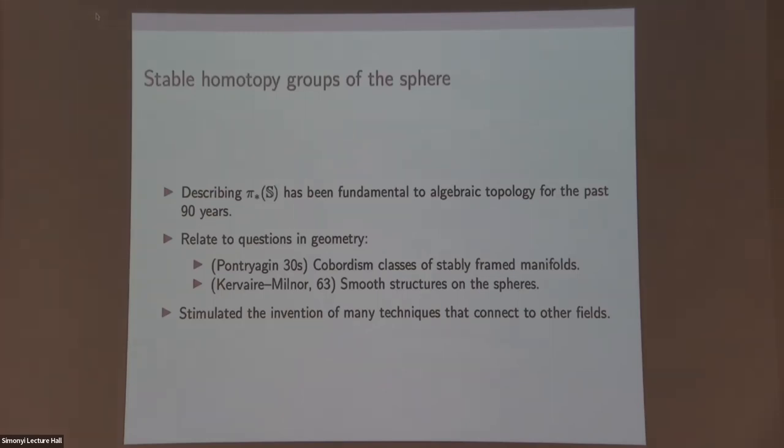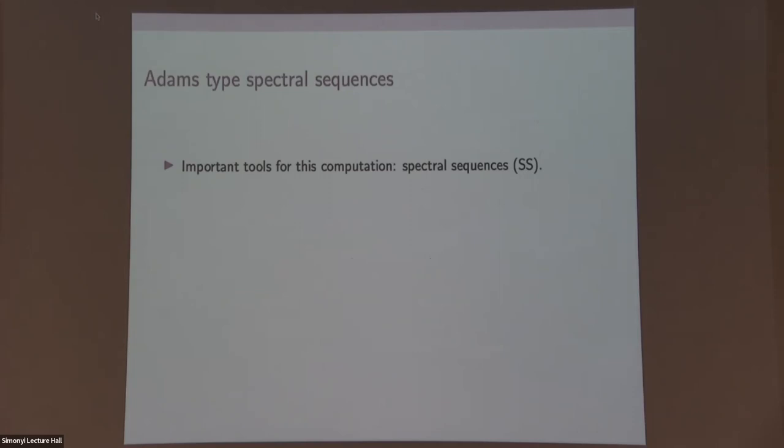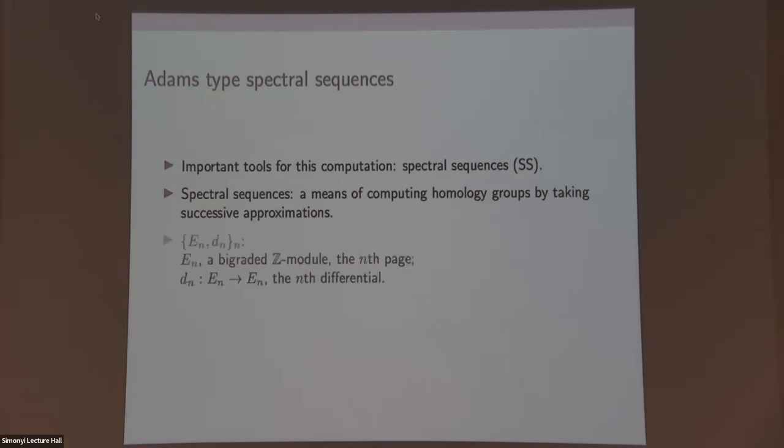One of the most important computational tools is spectral sequences. I will just briefly describe what a spectral sequence is. This is from Wikipedia: a spectral sequence is a means of computing homology groups, or in our case homotopy groups, by taking successive approximations. In a spectral sequence, you have the following data: for each n, you have E_n, which is a big graded Z module, and you have d_n, which is an endomorphism on E_n, and that's the differentials.